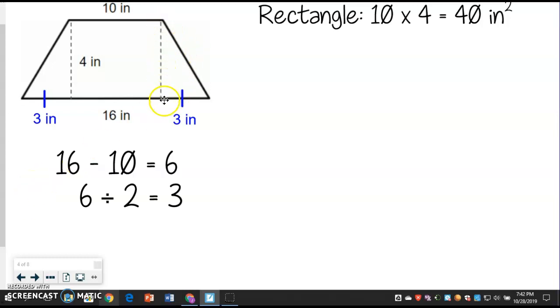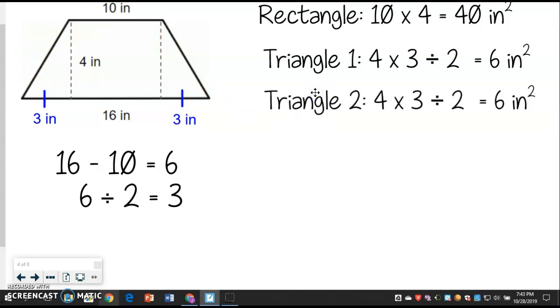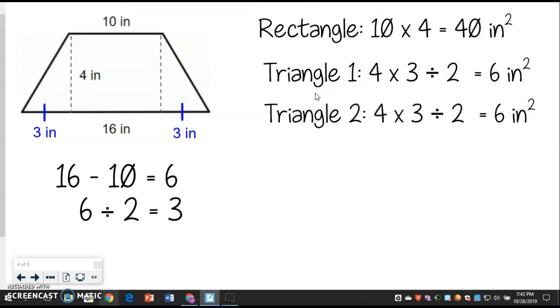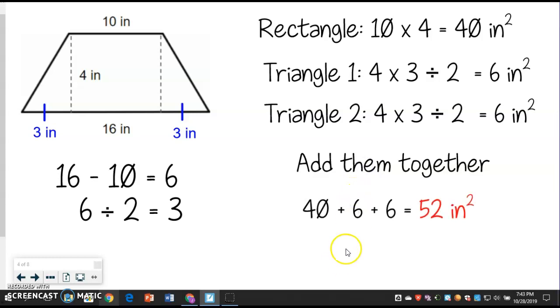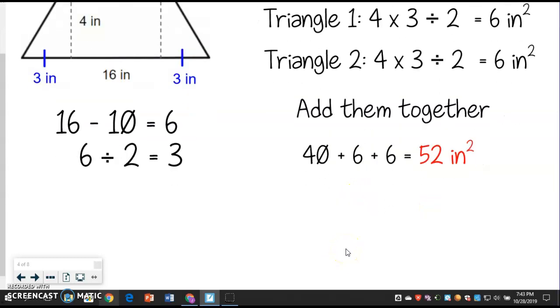So now we need to figure out the area of this triangle. And when we do triangles, remember the biggest rule to remember is to divide by 2. So we need to do base, which is 3, times the height, which is 4, same thing as over here. So 3 times 4 and then divide by 2. So 3 times 4 is 12 divided by 2 is 6. So triangle 1 is 6, but then we also have the triangle over here. So that one is also 6. Now we just add them all together. So we do 40 plus 6 plus 6. And that gets us 52 inches squared. And that's our answer.